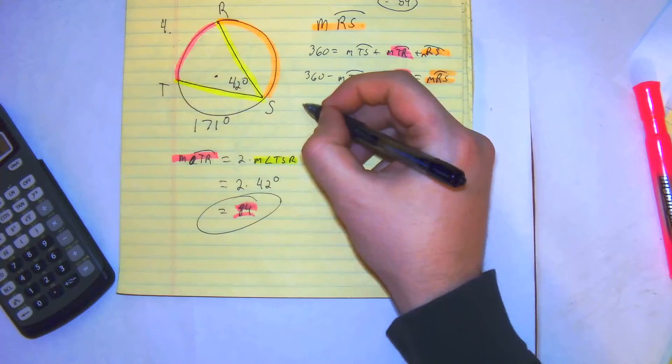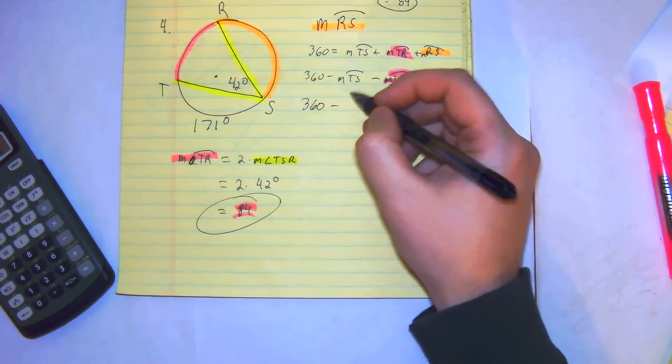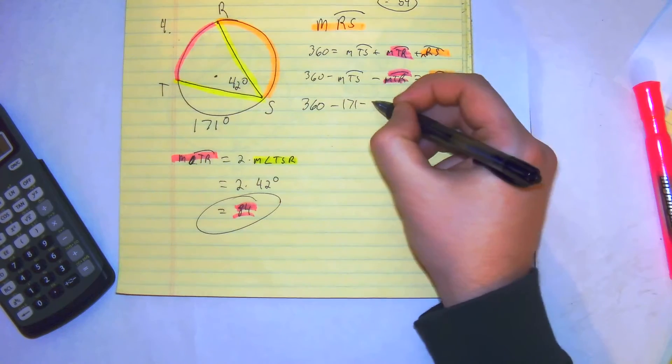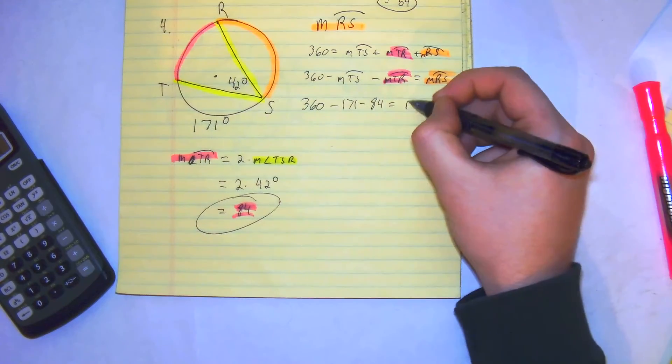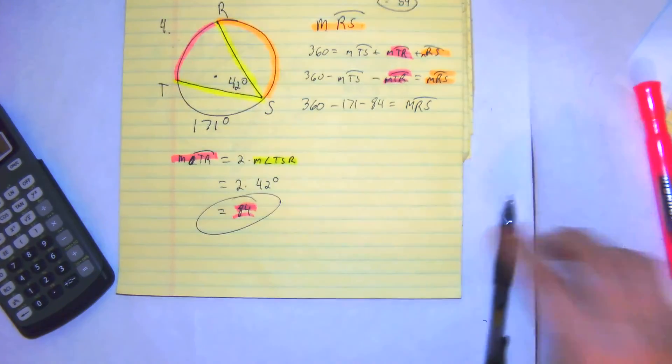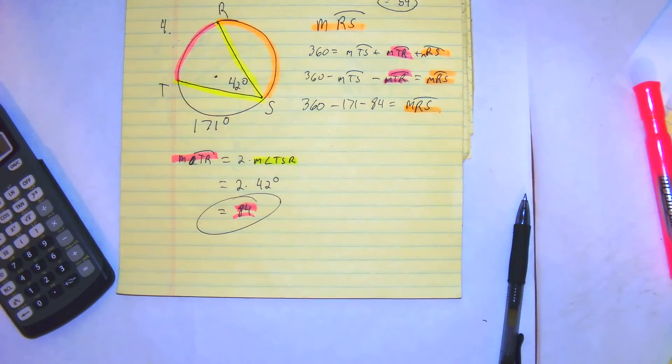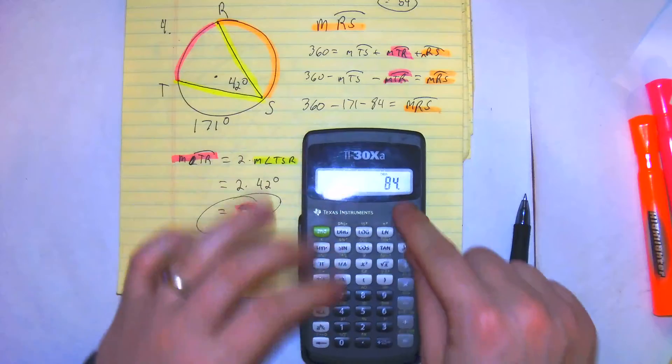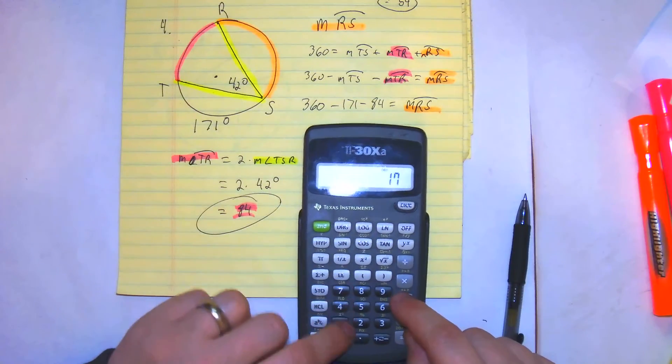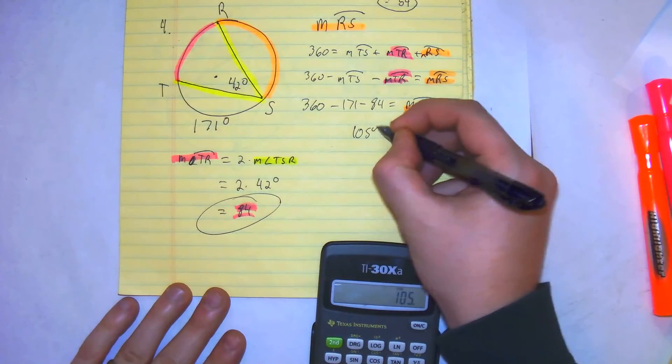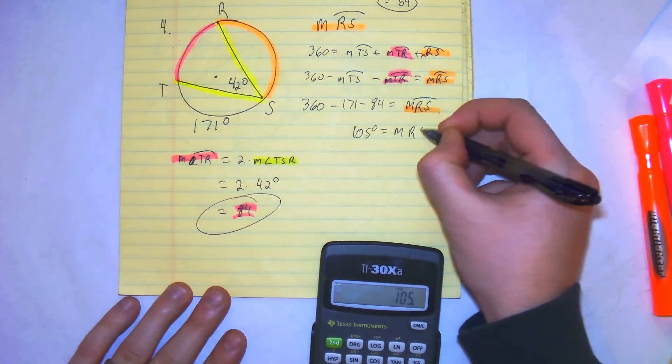We have everything we need. So in your calculator, you can just do 360 minus ts, which is 171 minus 84, which would get you the measure of rs. Remember, that's our goal of this problem. 360 minus 171 minus 84, you get 105 degrees equals the measure of rs.